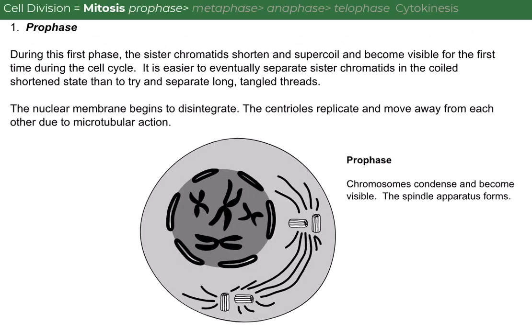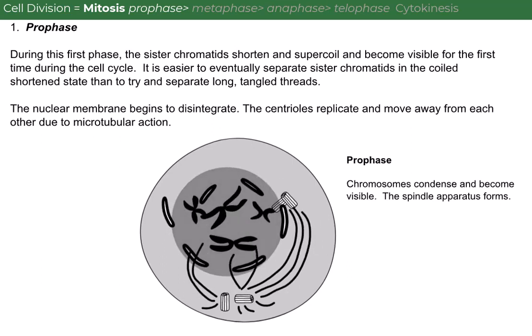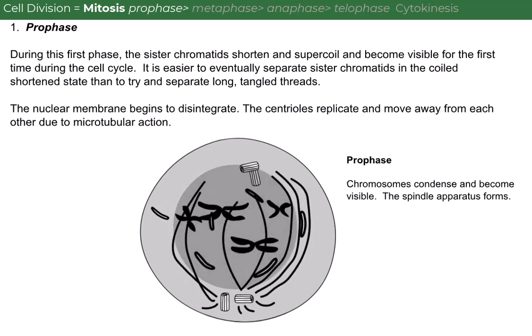Prophase. During this first phase, the sister chromatids shorten and supercoil and become visible for the first time during the cell cycle. It is easier to eventually separate sister chromatids in the coiled shortened state than to try and separate long, tangled threads. The nuclear membrane begins to disintegrate, and the centrioles replicate and move away from each other due to microtubular action.